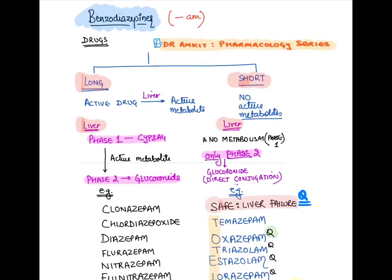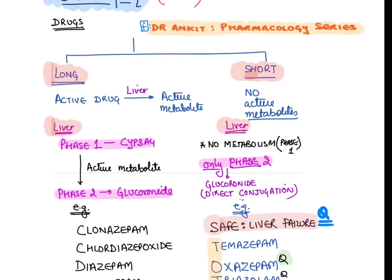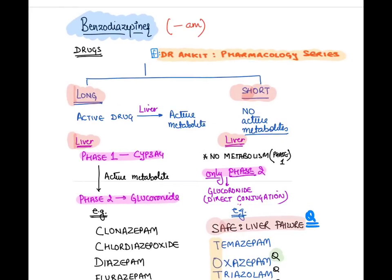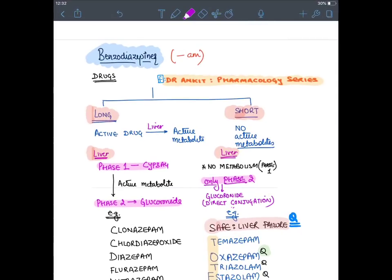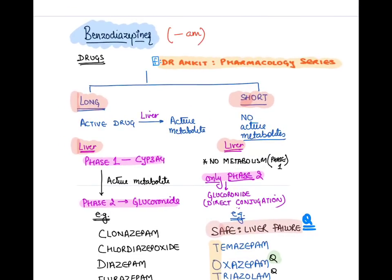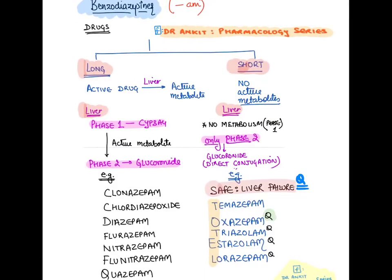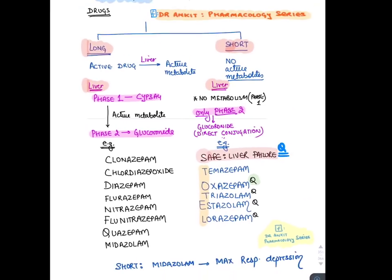Benzodiazepines end in '-am.' Long-acting benzodiazepines undergo slow phase 1 metabolism in the liver by CYP3A4, followed by rapid phase 2 glucuronide conjugation. Short-acting benzodiazepines skip phase 1 CYP3A4 metabolism and undergo direct glucuronide conjugation, making them absolutely safe in liver failure.